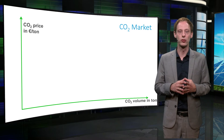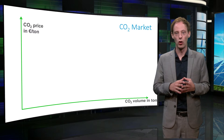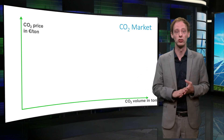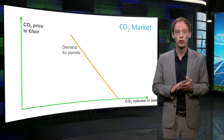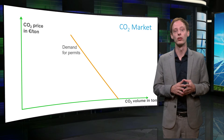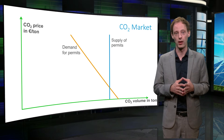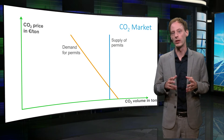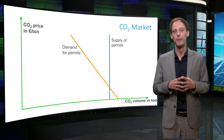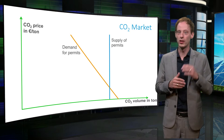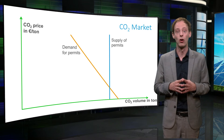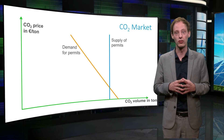Here we see a simplified version of the CO2 market. On the horizontal axis is the volume of CO2, and the vertical axis is the permit price. The orange line is the demand curve, and the blue line is the supply curve. In this graph we don't consider trade between the producers at this point, so the supply of CO2 credits is only determined by the volume of credits that the government makes available — represented as a vertical line.